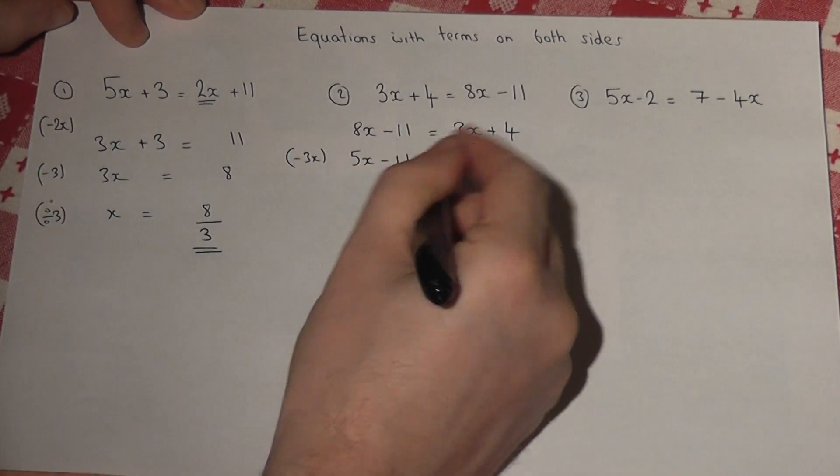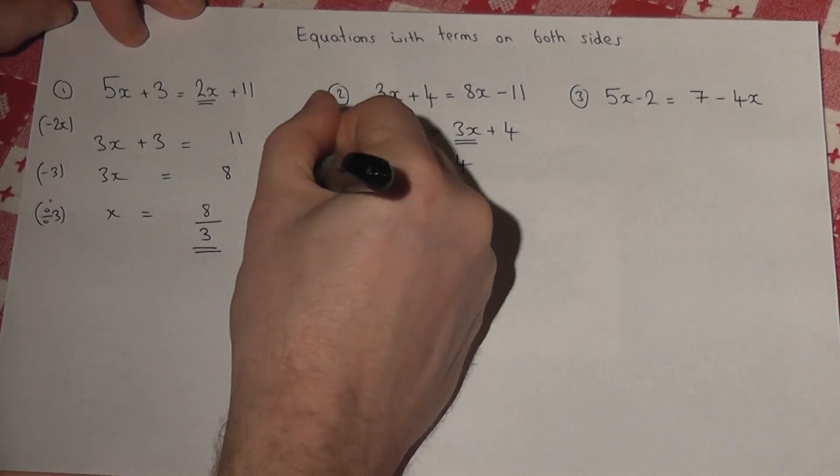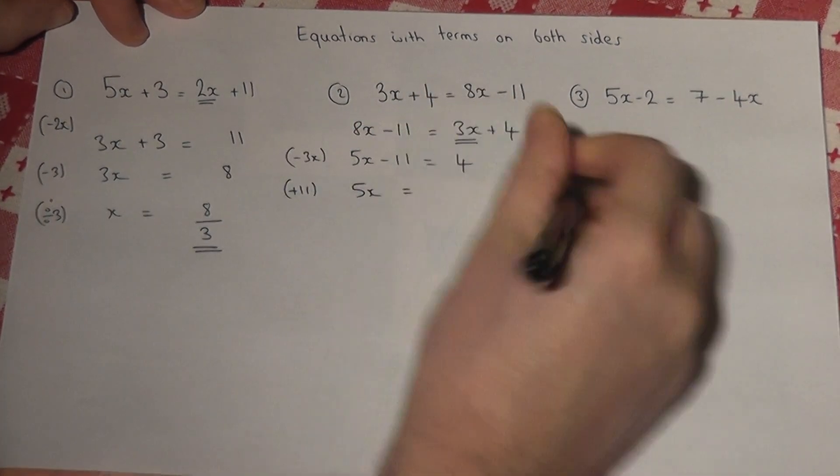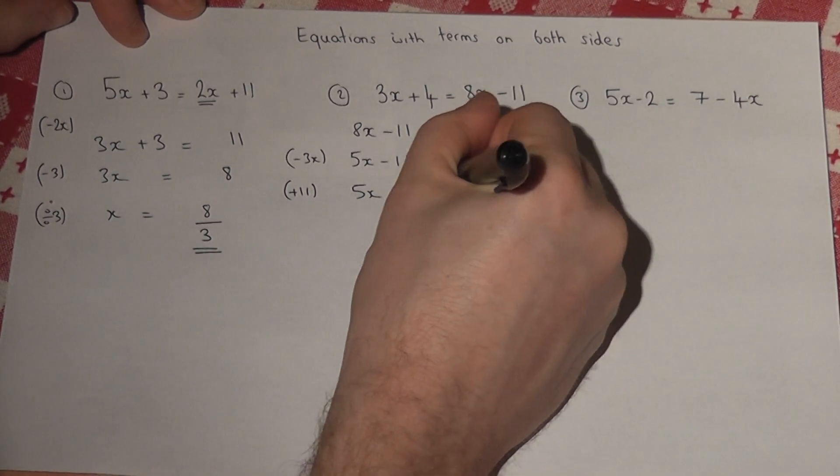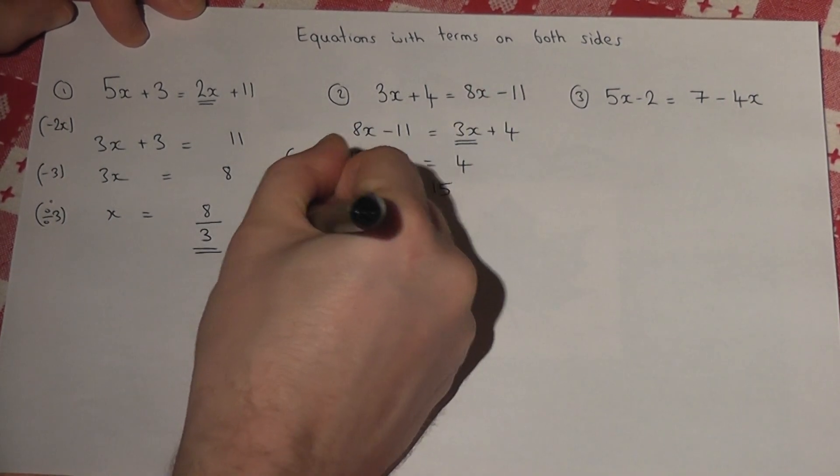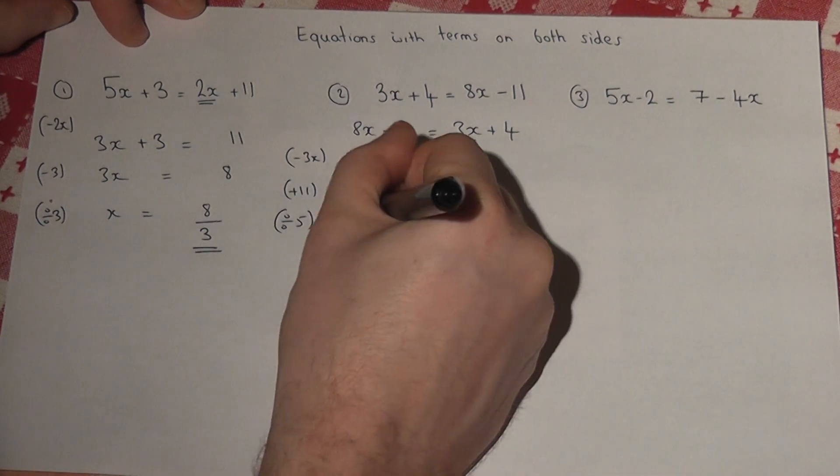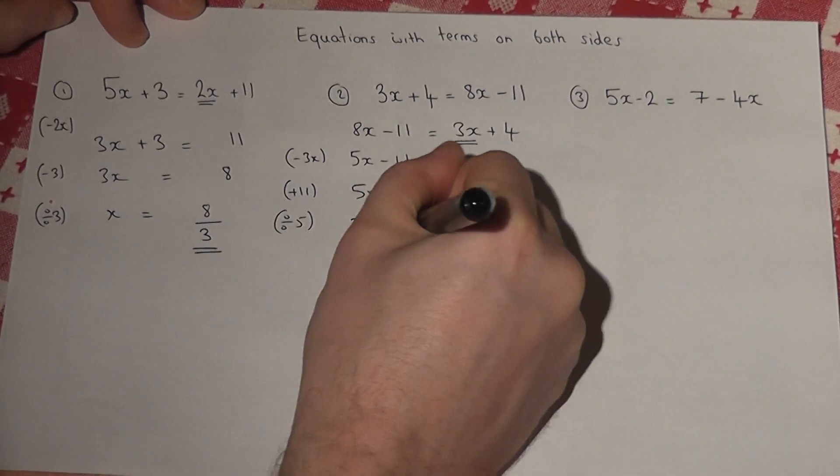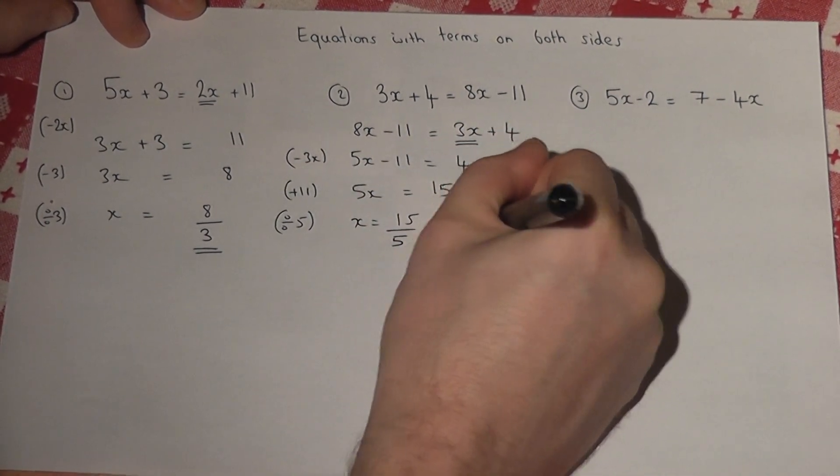I now need to add 11. So 5x equals 4 plus 11 is 15. And then divide by 5, so x equals 15 divide by 5, which equals 3.